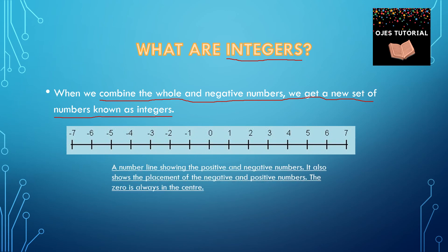This is the number line which shows the positive and negative numbers and their placement. The 0 is always in the center. On the right side of 0, there are all the positive numbers: 1, 2, 3, 4, 5, etc. And on the left side of 0, there are all the negative numbers: minus 1, minus 2, minus 3, minus 4, minus 5, etc.